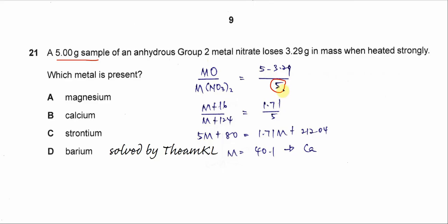We need to get the mass of the metal oxide. So the residue is the metal oxide. We use 5 gram minus 3.29 gram. The 3.29 gram is the nitrogen dioxide and oxygen that's released. The one that's left as a solid will be the metal oxide. So we can get the mass of metal oxide.